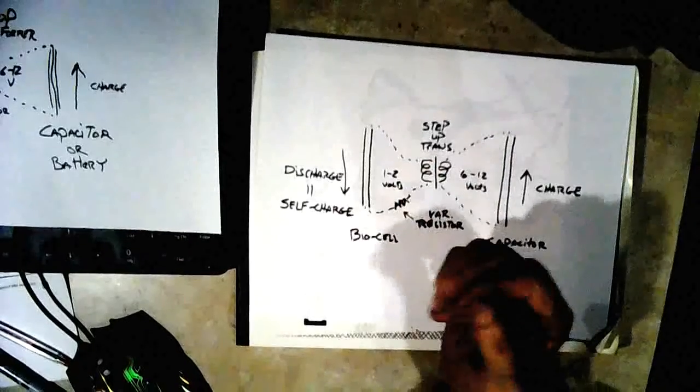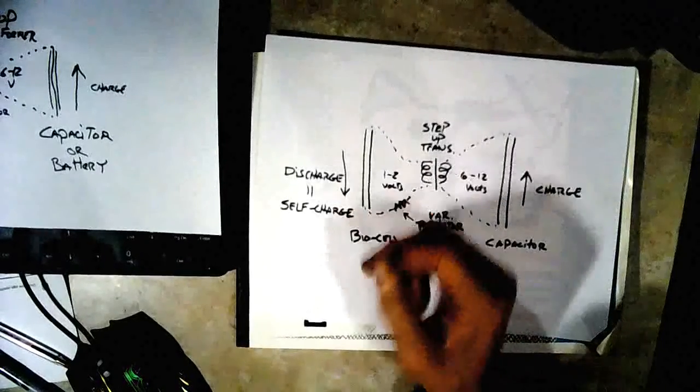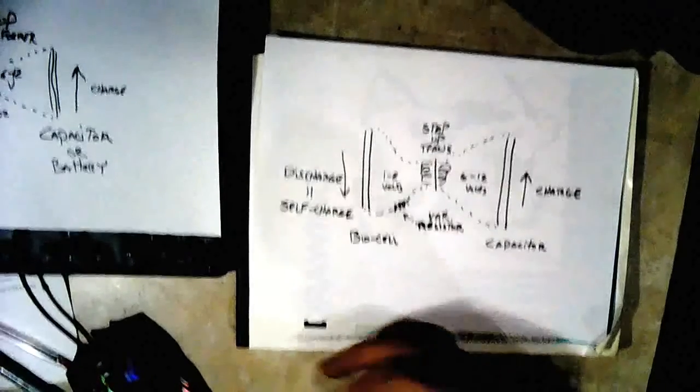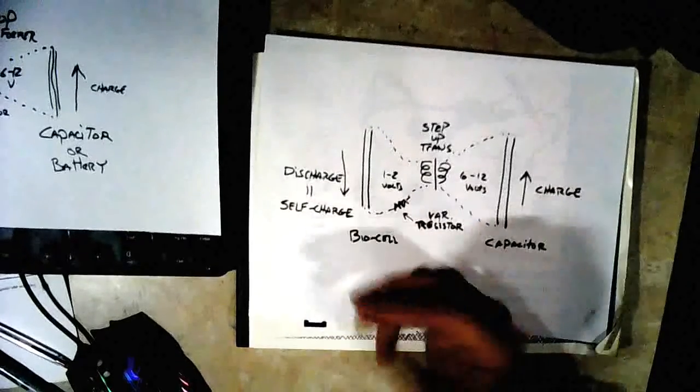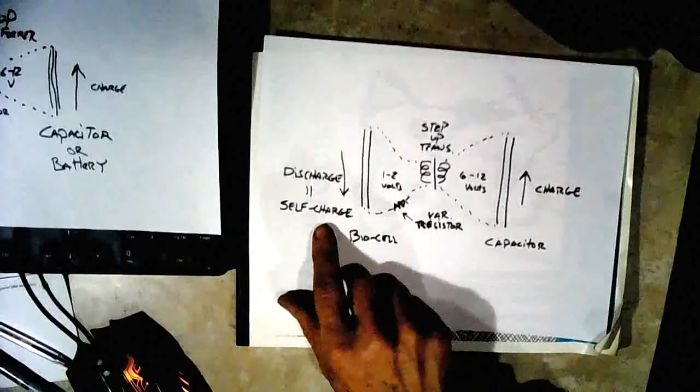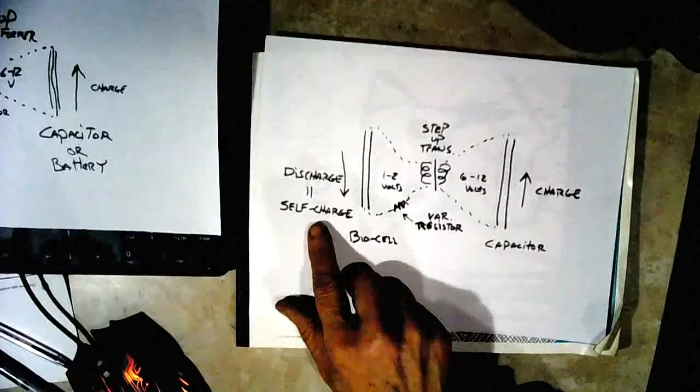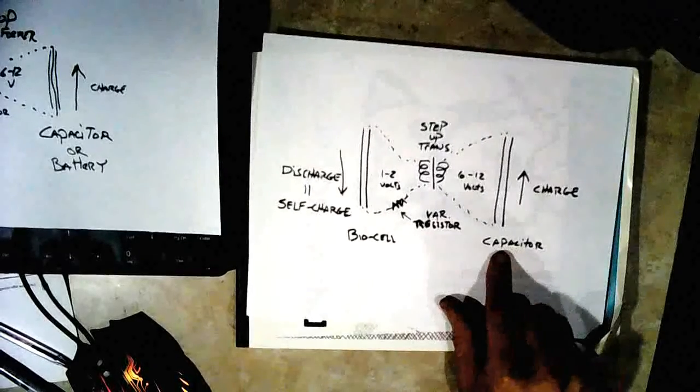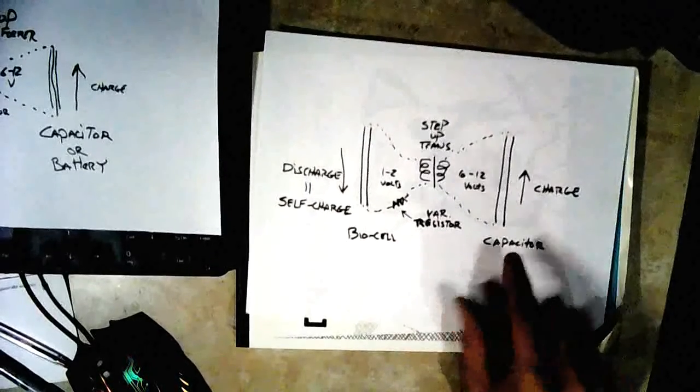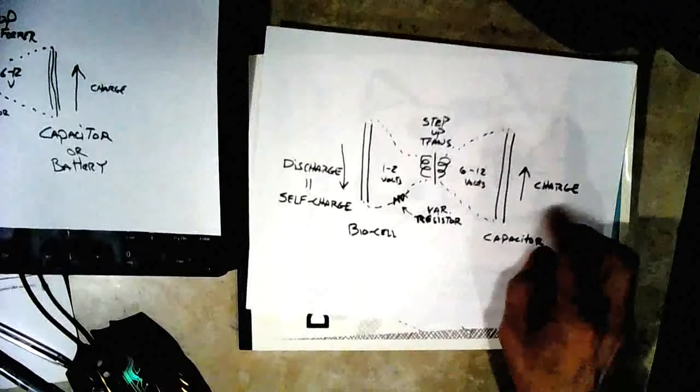I think that would be more efficient than letting it charge up and then discharging it repeatedly. I think the best bet would be to keep the biocell discharging all the time and keep your capacitor charging all the time, then just draw off your power from the capacitor.